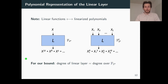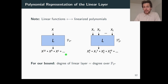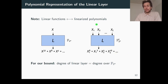Before presenting our bounds, let me emphasize the polynomial representation of linear functions. The main point is that F2-linear functions correspond with F2-linearized polynomials — a linearized polynomial is a polynomial with terms having only powers of 2 as exponents. Given a linear function L over F2 to the n, we represent it as a polynomial of this form. The same holds for linear functions over F2 to the n to the t, where we arrive at a multivariate polynomial that is linearized in each variable. It is exactly this multivariate linearized representation that defines the degree of the linear layer in SPNs.